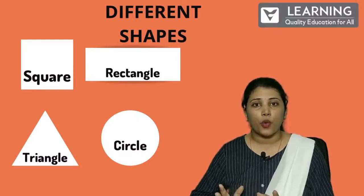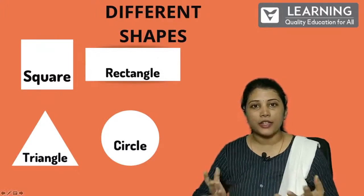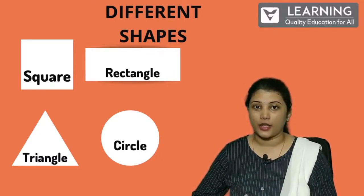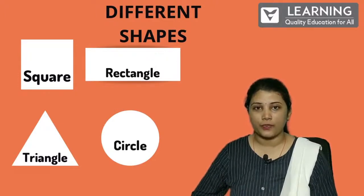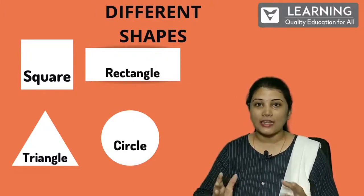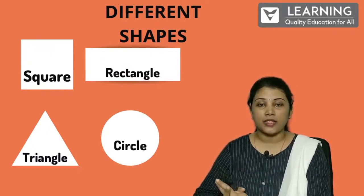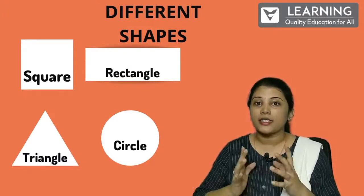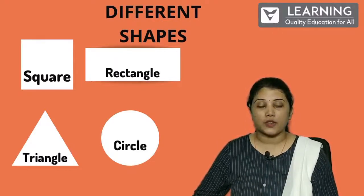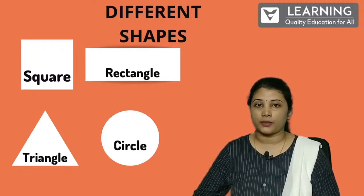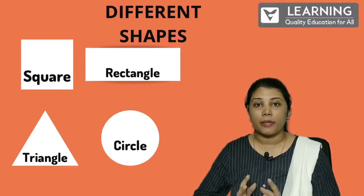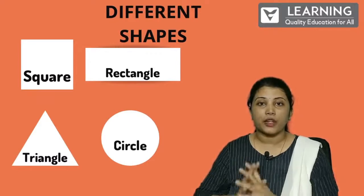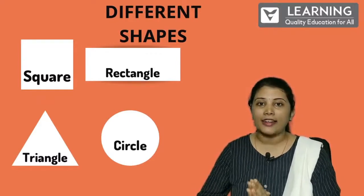These four shapes are very important. Why? Because all the objects around you are formed with these four shapes: square, rectangle, triangle, and circle. I have shown you a ball — circle. Note it down in your copy. How does each shape look? How will you identify them?